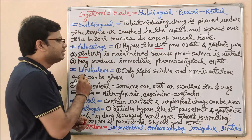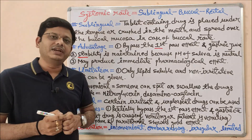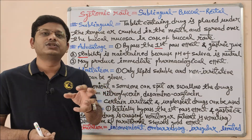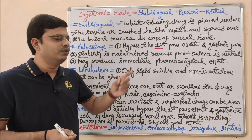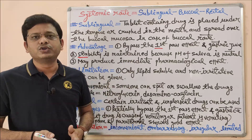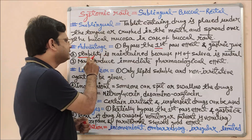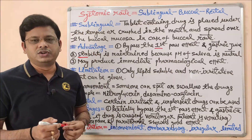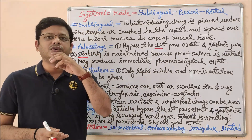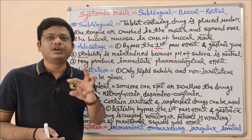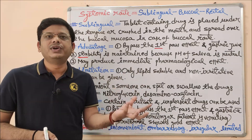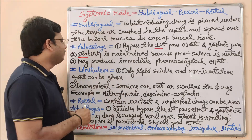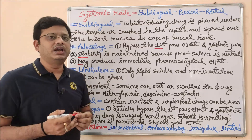The next advantage is stability. Stability is maintained for drugs that need a stable environment to produce their action. If a drug is not stable at acidic pH, it cannot produce its action via oral route. But in case of sublingual and buccal, stability is maintained because the pH of saliva is almost neutral, so the drug will not be destroyed by acid.